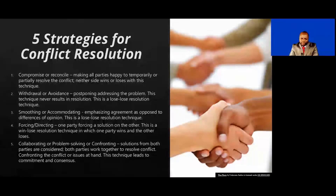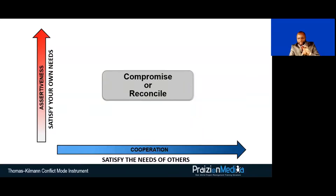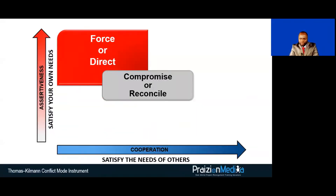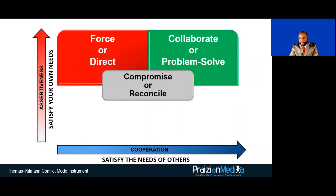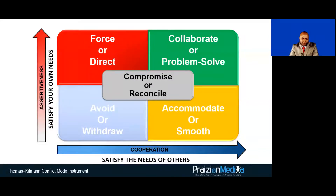To understand this properly, the Thomas Kilman conflict mode instrument shows you that you could be somewhere in the middle of cooperating and being assertive — compromise or reconcile. Or you could be extremely assertive with low cooperation — that's force or direct, perhaps in an emergency. High assertiveness and high cooperation is collaborate or problem solve. Low assertiveness and low cooperation is avoiding or withdrawing. Or if you're thinking all about the other party, you smooth or accommodate — you concede your viewpoint to the needs of someone else.